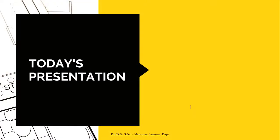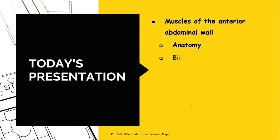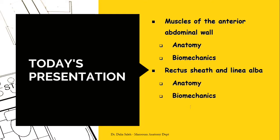In this presentation, I will discuss the following points. First, the muscles of the anterior abdominal wall regarding their anatomy and biomechanics. The rectus sheath and the linea alba regarding their anatomy and biomechanics. And finally, the umbilical ring and umbilical fascia and their anatomical variations.